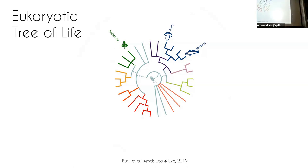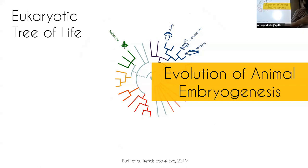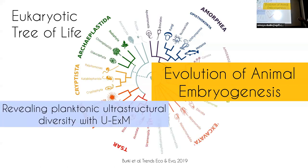In my lab, we're an evolutionary cell biology lab, and one of the big questions we're interested in is understanding the evolution of animal embryogenesis. For that, we're trying to establish a specific lineage called ichthyosporeans to answer one of these questions. The second thing we're contributing to is trying to understand and point out the structural diversity using comparative approaches across a broader set of species.